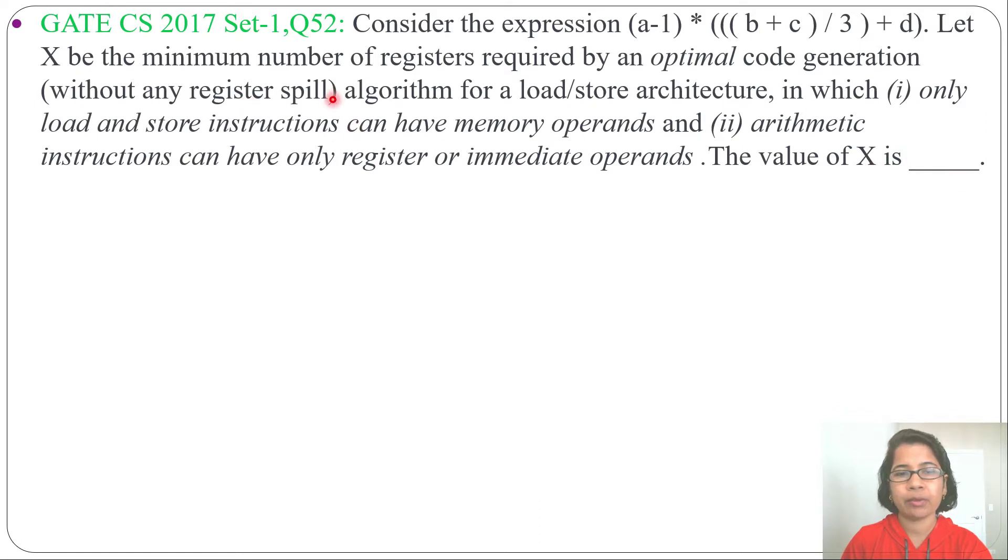There should not be any register spill. What is register spill? There should not be any store. We cannot store content of register into memory location. And for arithmetic instruction, operand will be only in register or immediate operand. What is immediate operand? The number like 1, 3, these are the immediate operand. So register allow or immediate operand are allowed. The question is about minimum number of registers required for optimal code generation.